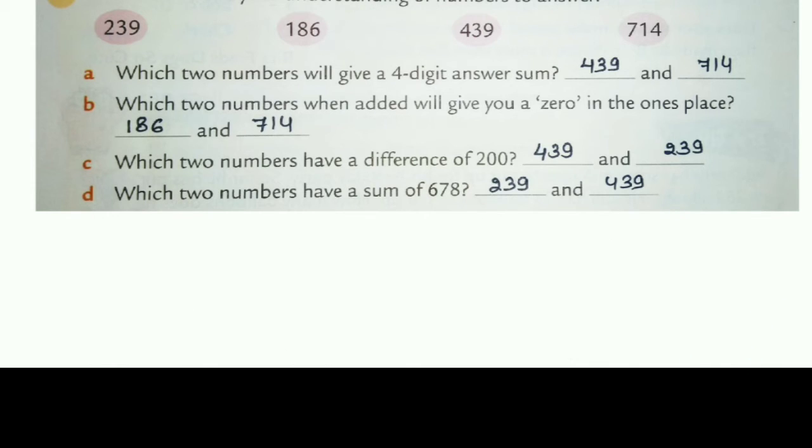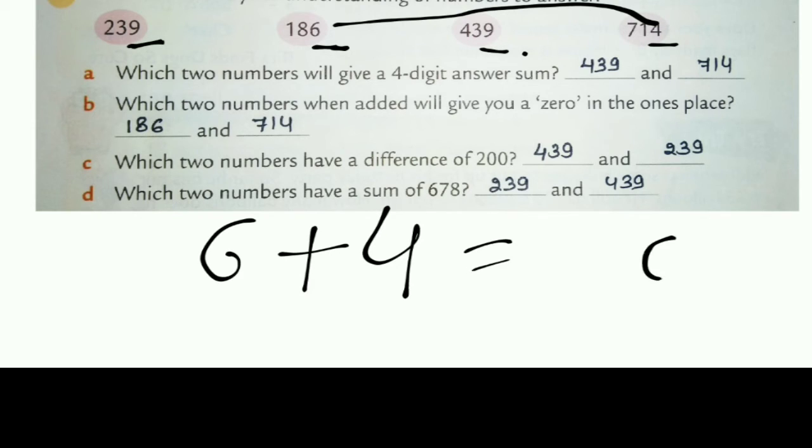Next, which two numbers when added will give you a 0 in the 1s place? 1s place means the beginning 1. See, 9, if we add 9 and 6 we will not get 0. If we add 6 and 9 again the same thing. If we add 9 and 4 then also we are not getting 0. So if we add 6 and 4, we get 10, it means 0. So what we will do here? We will add 186 and 714, so we get 0 in the 1s place.